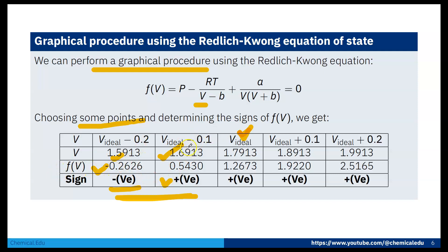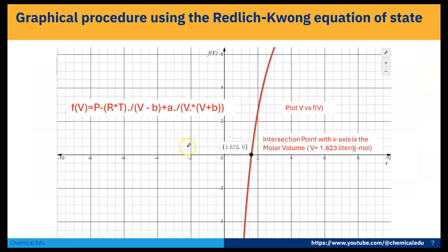After getting all these values, I'm taking many points and then plotting. This is the f of V curve for different V values. If I plot that, the plot will intersect the x-axis. The y-axis is f of V and the x-axis is V.